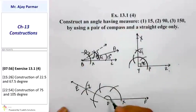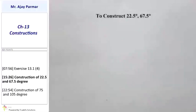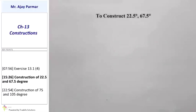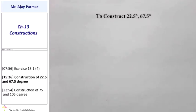Let us construct some extra angles that we might require: 22.5° and 67.5°. 22.5° is obtained by drawing the bisector of 90°, which gives 45°, and then the bisector of 45° and 0° gives 22.5°.